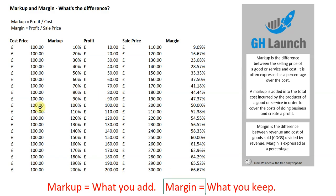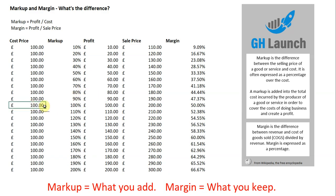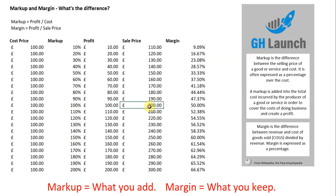Let's use the 100% markup as an example. The cost price is £100 and you mark it up 100%, so 100% of £100 is £100. Therefore the sale price is £200, but you only get to keep 50% of that £200. That is how margin works.